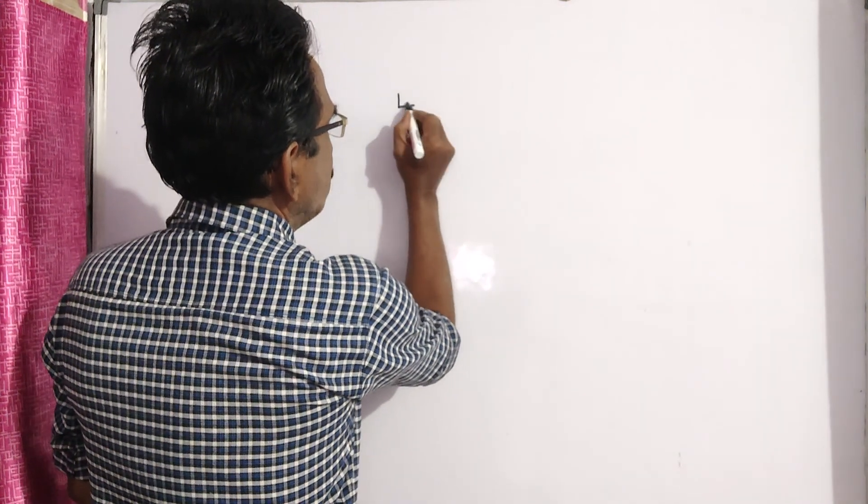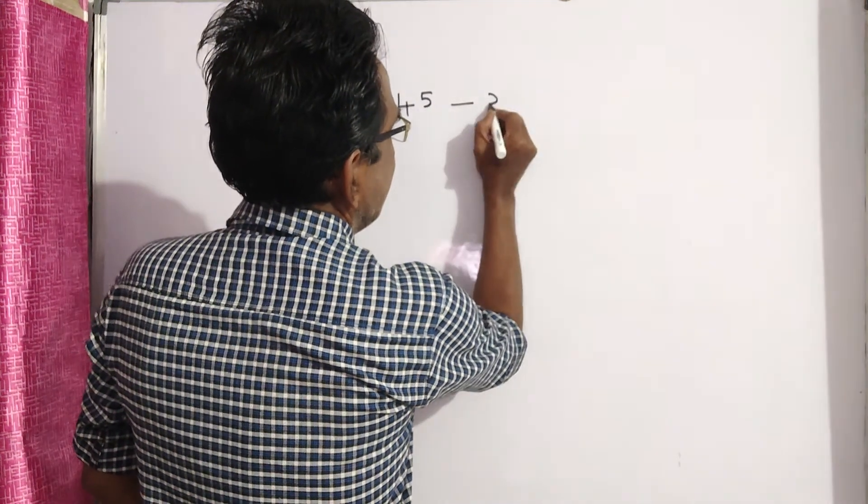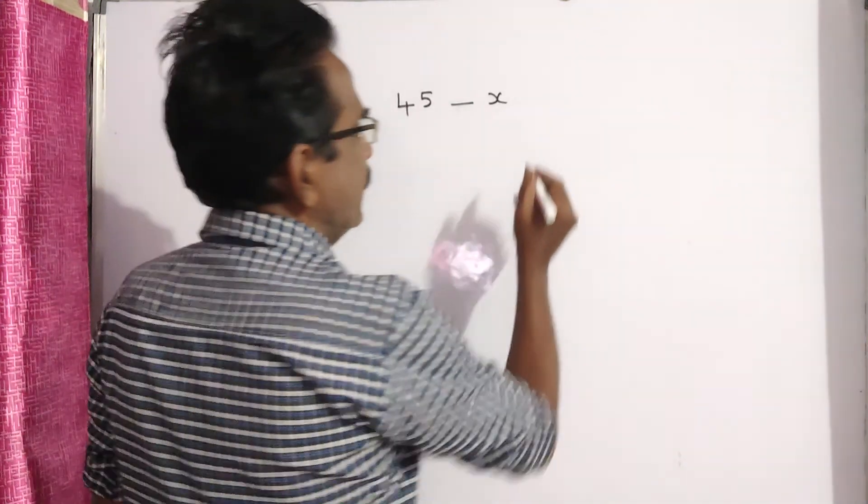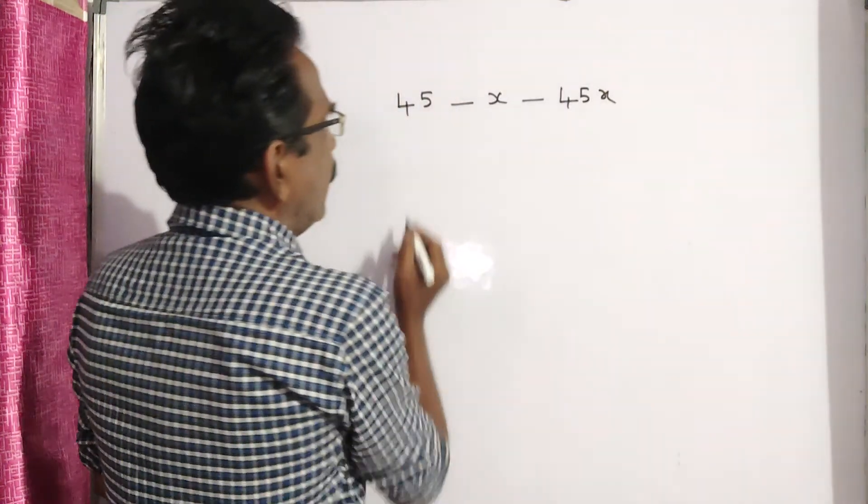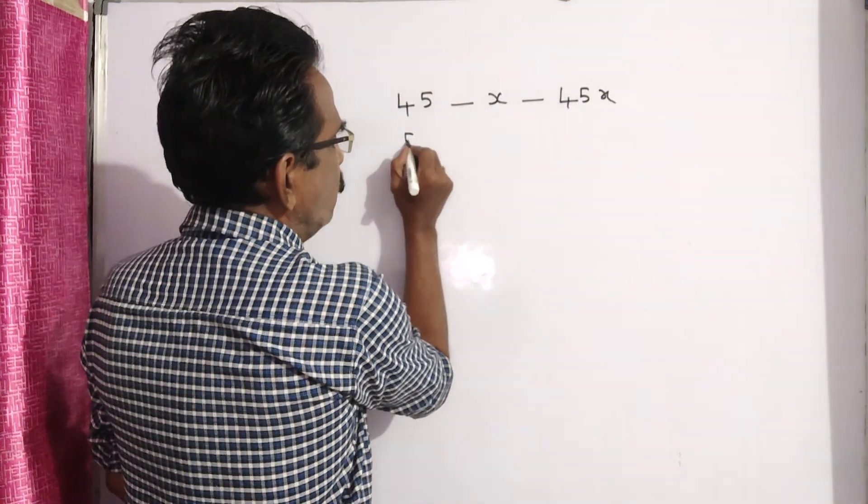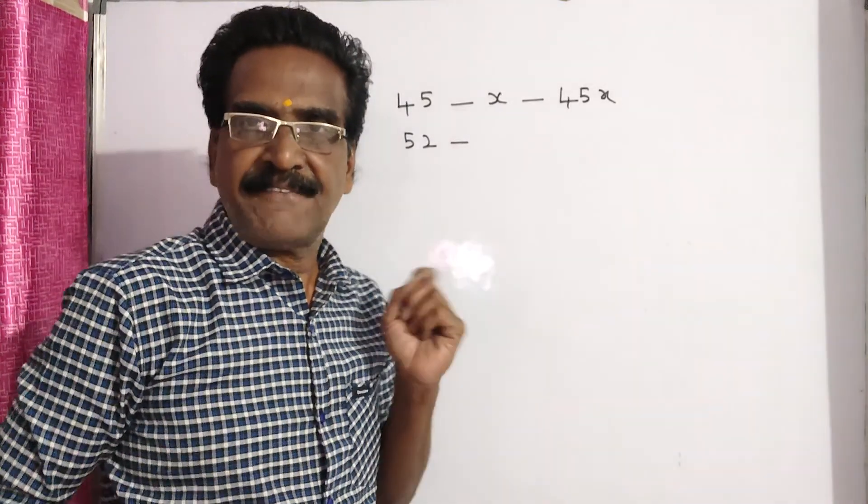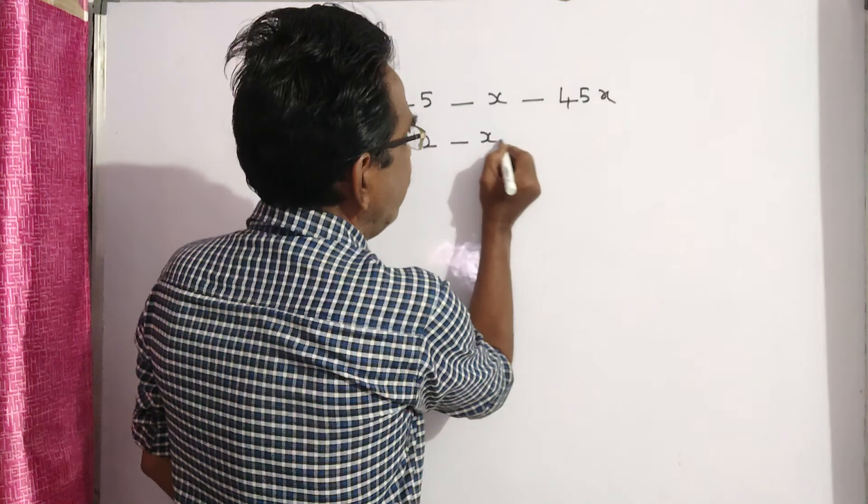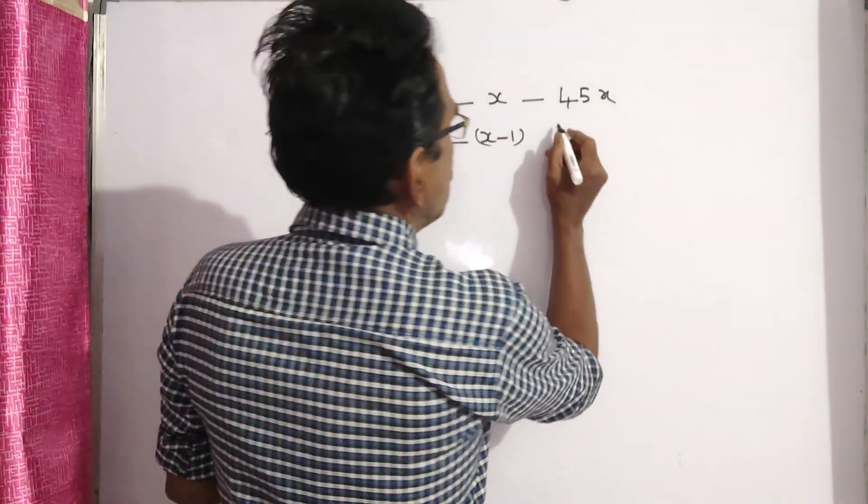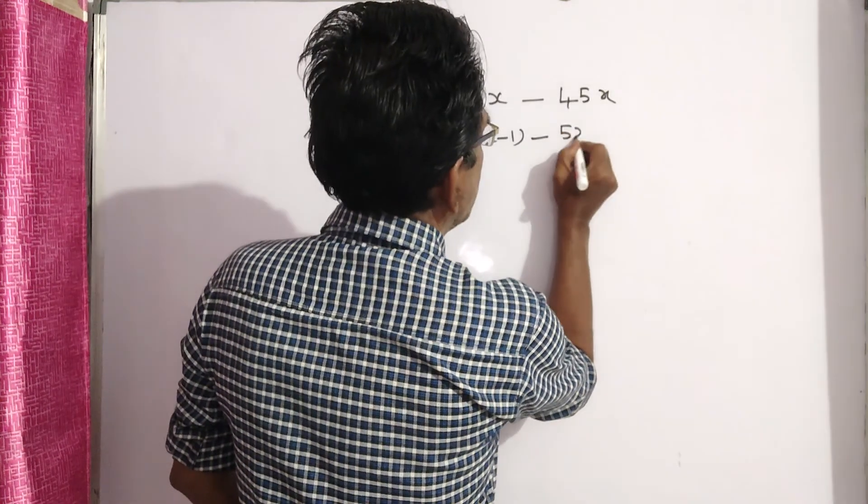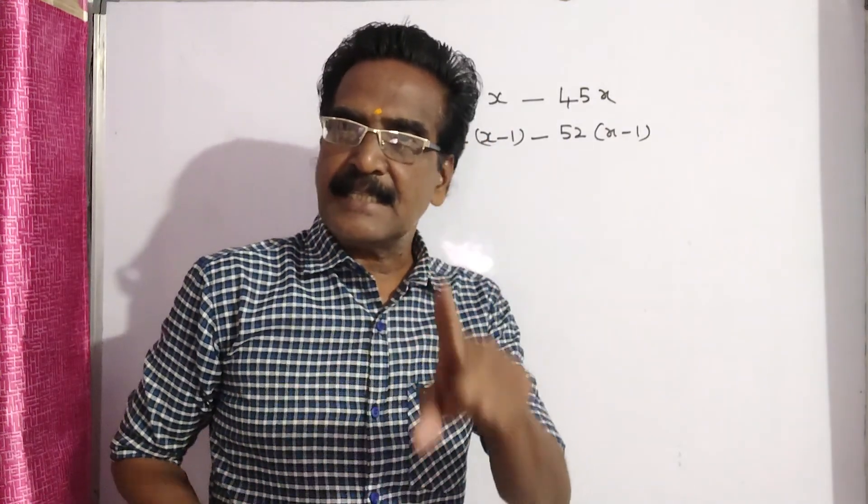See friends, there are 45 students and let us say the average expenditure per day is x. Then the total expenditure is 45x. Now 7 students, the number of students increased by 7, then the average expenditure is diminished by 1. So now the total expenditure is 52 into x minus 1.